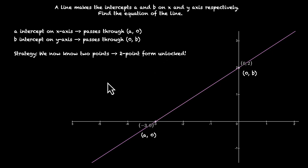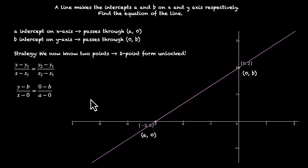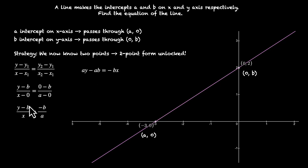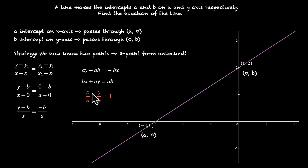Using the two point form: y minus y1 over x minus x1 equals y2 minus y1 over x2 minus x1. Taking x1 y1 as 0 comma b and x2 y2 as a comma 0, we get y minus b over x equals 0 minus b over a minus 0, which simplifies to y minus b over x equals minus b over a. Cross multiplying: ay minus ab equals minus bx. Bringing x to this side gives bx plus ay equals ab. Dividing the entire equation by ab, we get x over a plus y over b equals 1.